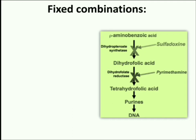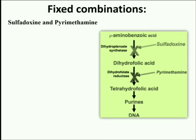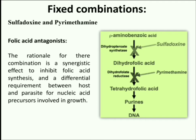Next is the mode of action of fixed combinations, collectively known as folic acid antagonists. It is believed that their combination produces a synergistic effect in the inhibition of folic acid synthesis. Folic acid is essential for the survival and growth of the malaria parasite. Sulfadoxine inhibits the activity of dihydropteroate synthase, whereas pyrimethamine inhibits dihydrofolate reductase, and the final result is inhibition of the synthesis of tetrahydrofolic acid. Sulfadoxine and pyrimethamine are indicated for the treatment of Plasmodium falciparum malaria in those patients in whom chloroquine resistance is suspected.